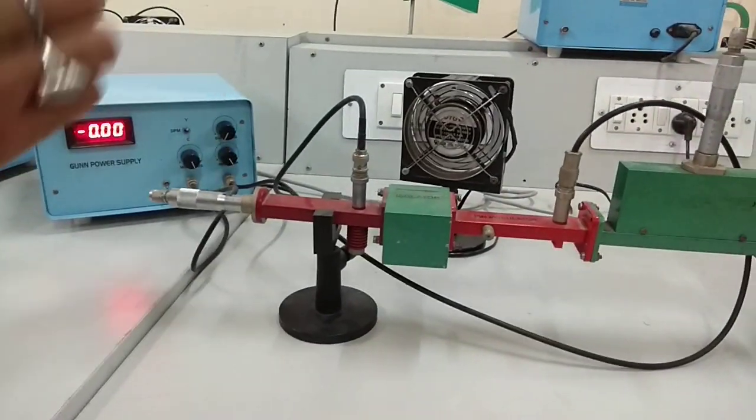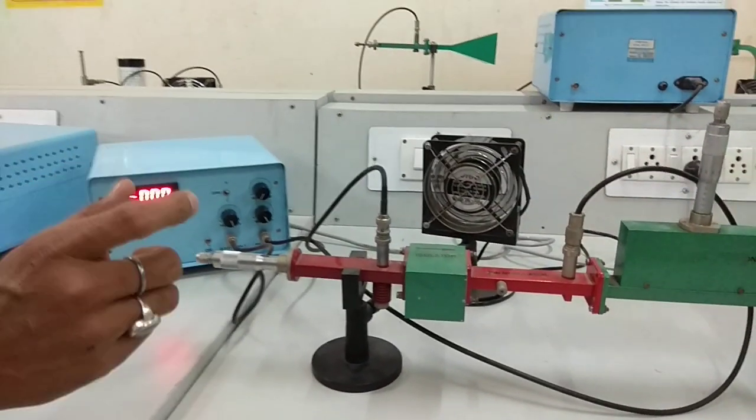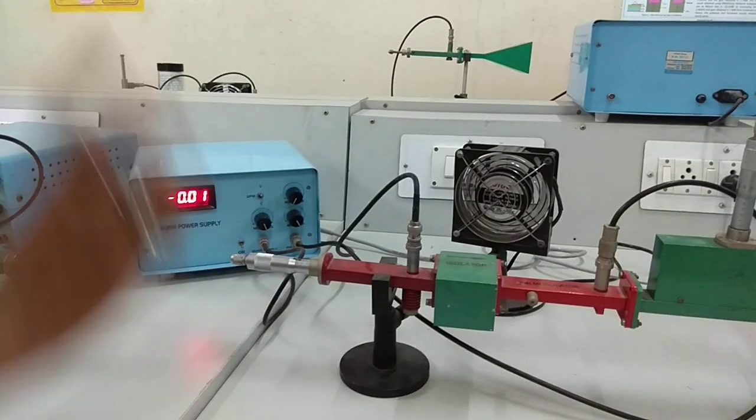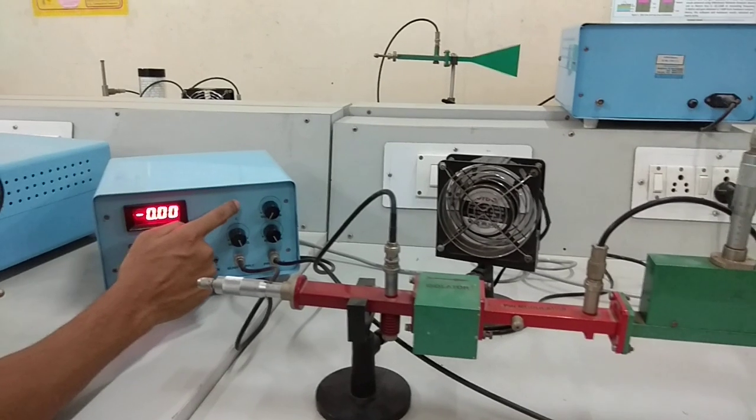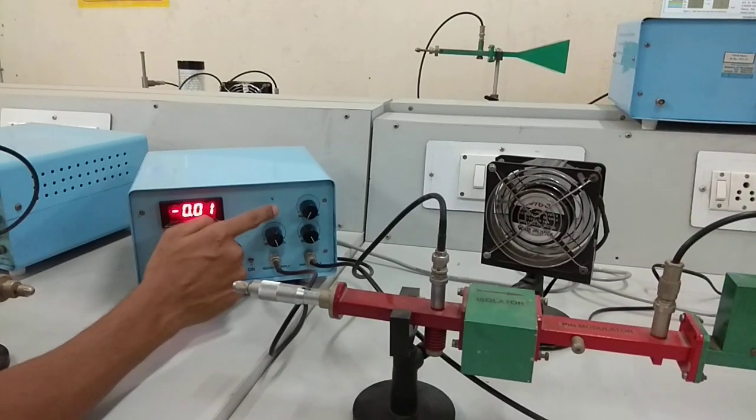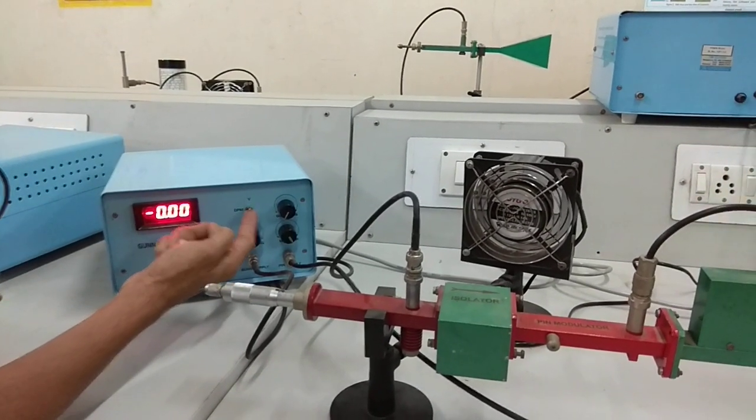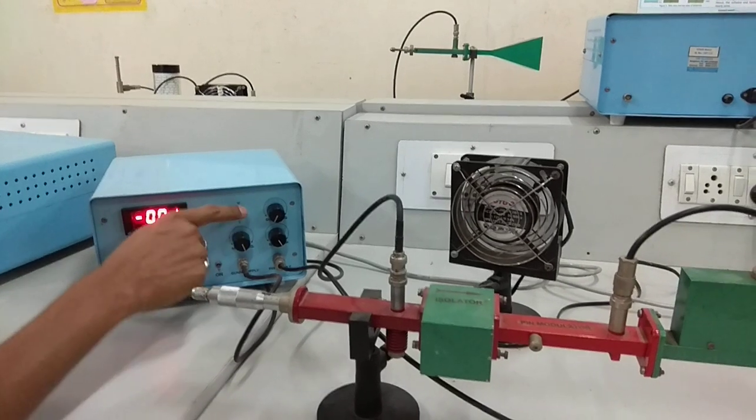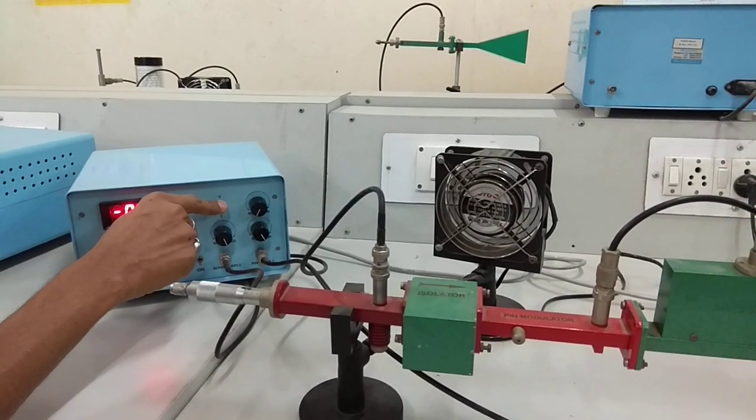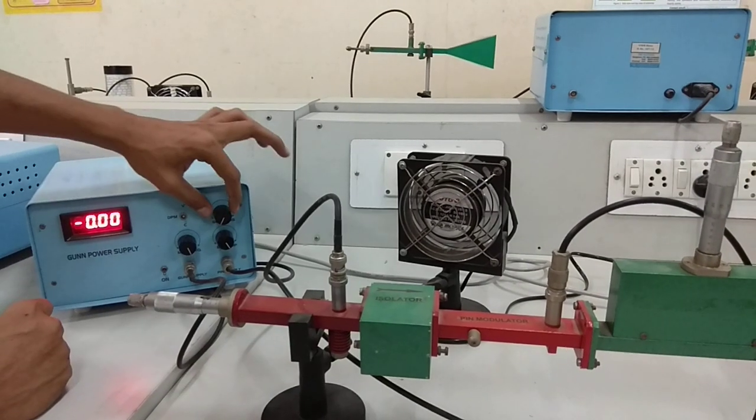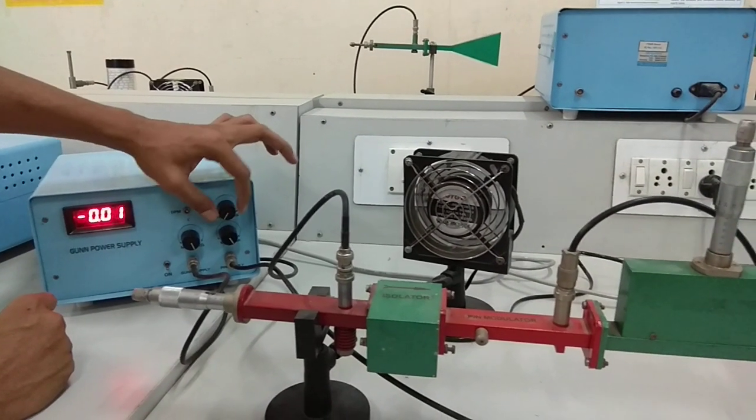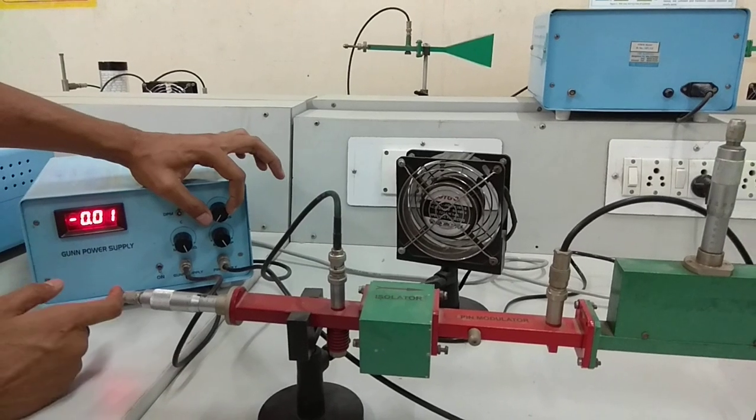We can vary the frequency for the modulation and control the magnitude also. These two knobs are for seeing the voltage available for the gun diode and the current available. If you are keeping at the up portion, we are seeing the voltage. If you are keeping at the down side, we are seeing the current. This one is to increase the voltage value and the current value.